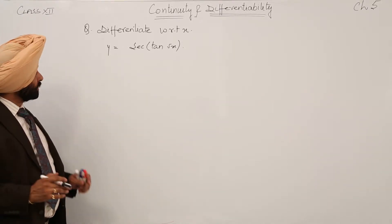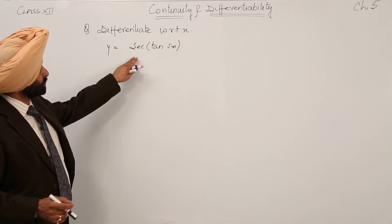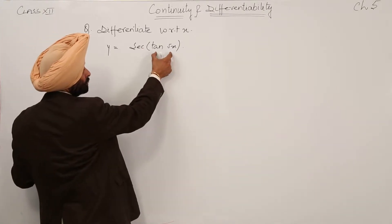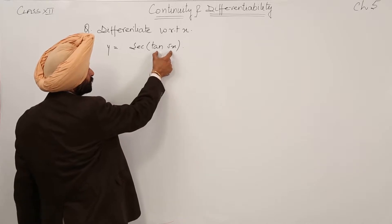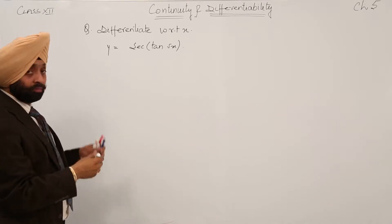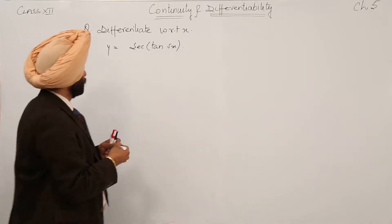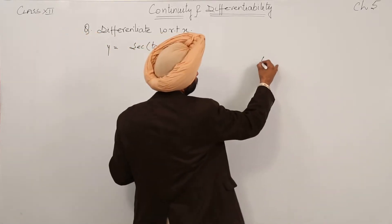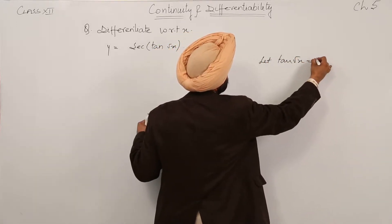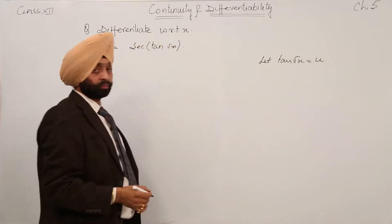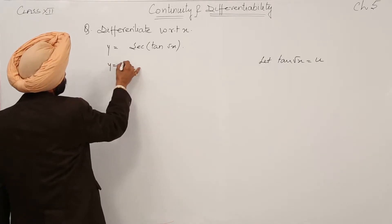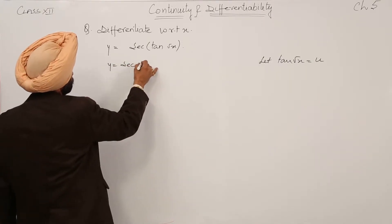Going just to the depth of the topic. We are having y is equal to secant tan under root x. It means the chain rule will be applied here. Let tan under root x be equal to u, and here y becomes equal to secant u.